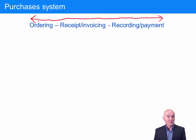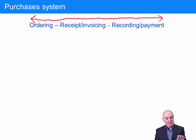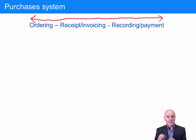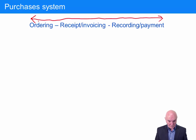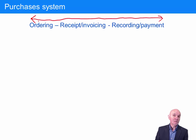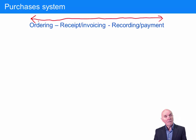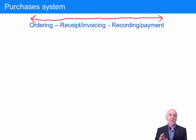We want to make sure that at no point in this pathway can a transaction go missing, be recorded incorrectly, or be duplicated. One of the things we're looking for in a purchases system is how do we make sure we don't pay supplier invoices twice? What happens if a thousand invoices are coming in every day from suppliers? How do we guarantee that by accident, one of them doesn't go around the system twice?